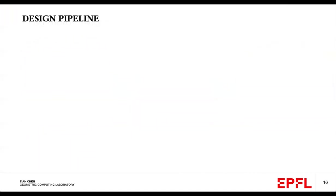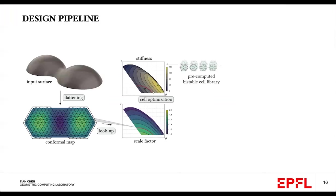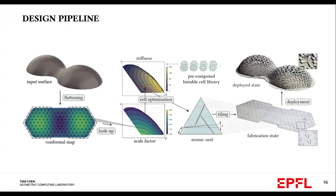So here's the design pipeline. We first have the input surface, and then we compute the conformal map of this input surface. At this stage, we verify the scale factors are within the admissible range, and then we lay out a regular grid of triangles. For each triangle, we seek along the isoline of the scale factor, the stiffest parameterization of the unit cell from the pre-computed bistable cell library, and then we tile each one of the triangles into the grid, and we fabricate this using a laser cutter, and then we're able to deploy this into the 3D.